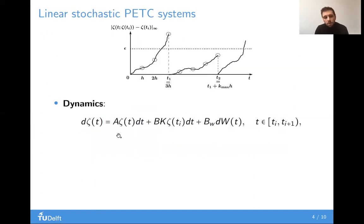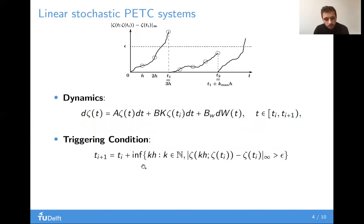This work considers linear systems with additive Gaussian noise, and as usual in ETC, the control input is held constant between consecutive sampling times. In periodic ETC, which is what we study here, the sampling times are determined by periodically checking, with period H, if a state-dependent triggering function exceeds a certain threshold epsilon. In our case, this triggering function is just the deviation of the current state from the previously measured state, which is called Lebesgue sampling.